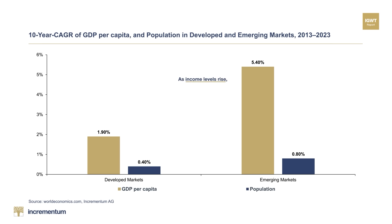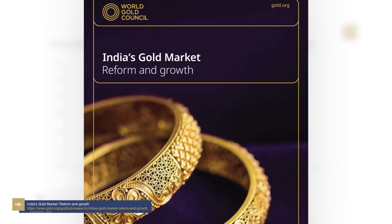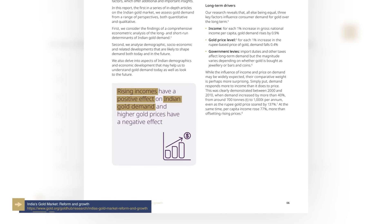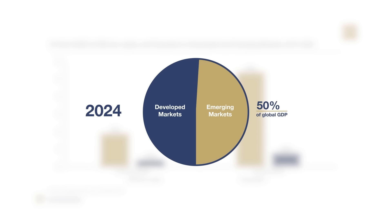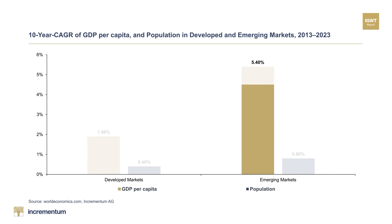As disposable income levels in emerging markets rise, the demand for gold increases, and this can propel the price of gold to a higher level. The World Gold Council, in its 2023 report, India's Gold Market Reform and Growth, shows that rising income is the most powerful driver of Indian gold demand in the long term, with demand responding more to income than to price. In 2024, around 50% of global GDP will be generated by emerging markets — a quarter of a century ago, this figure was just 19%. GDP per capita grew by an average of around 5.4% per year from 2013 to 2023, showing that this growth is not only due to population doubling in emerging markets. The increasing economic potential of the growing population is therefore a key driver likely to result in continued robust demand for gold in the coming years.